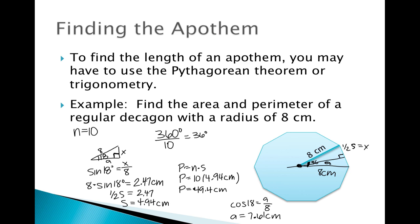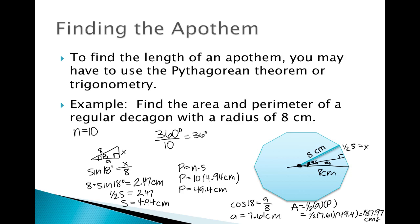Now we have all the pieces to solve for the area. The formula is area equals one-half times the apothem times the perimeter. Plugging in, we get one-half times 7.61 times 49.4, which equals 187.97 centimeters squared. That's how you use trigonometry to solve for the apothem and then the area of a polygon.